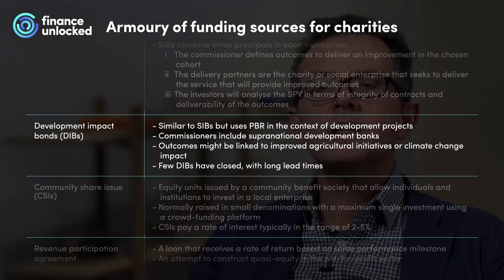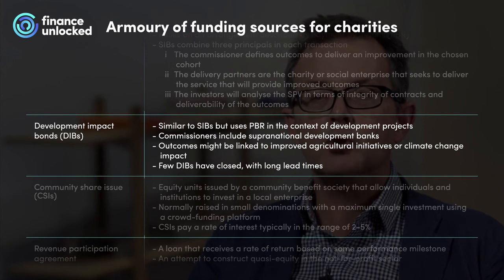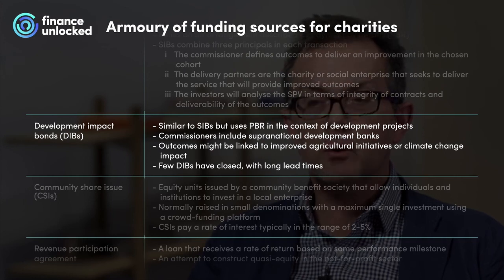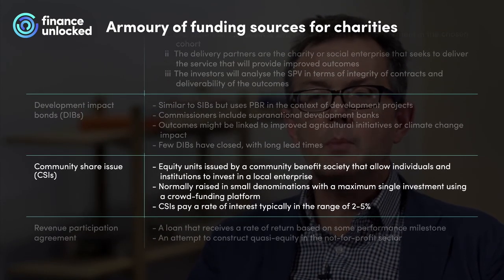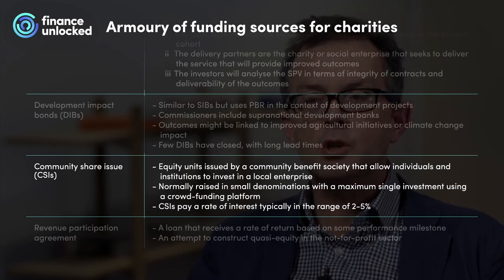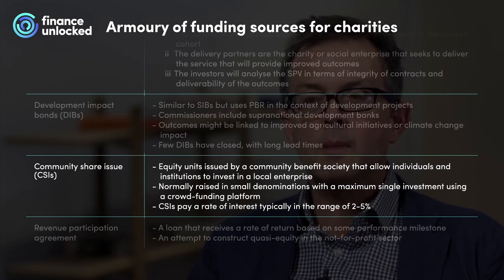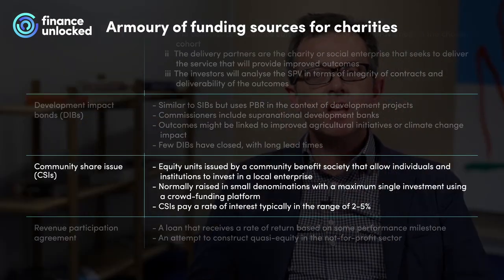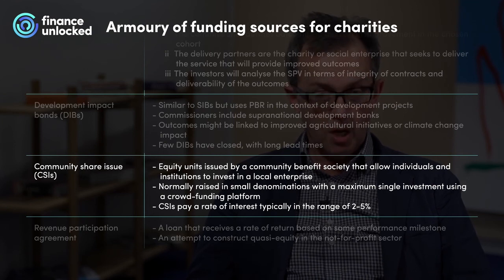Development Impact Bonds (DIBs) are similar to SIBs but use payment by results in the context of development projects. Commissioners here might be supranational development banks, and outcomes might be linked to improved agricultural initiatives or climate change impact. There have been few DIBs closed thus far, and lead times on these deals can be slow with foreign exchange and legal complications. Community Share Issues (CSIs) are equity units issued by a community benefit society, normally raised in small denominations with a maximum single investment of up to £100,000 using a crowdfunding platform. The shares are technically redeemable with notice but the issuer can decline to redeem due to insufficient financial resources — in that sense, CSIs represent permanent capital. They pay a rate of interest typically in the range of 2–5%.